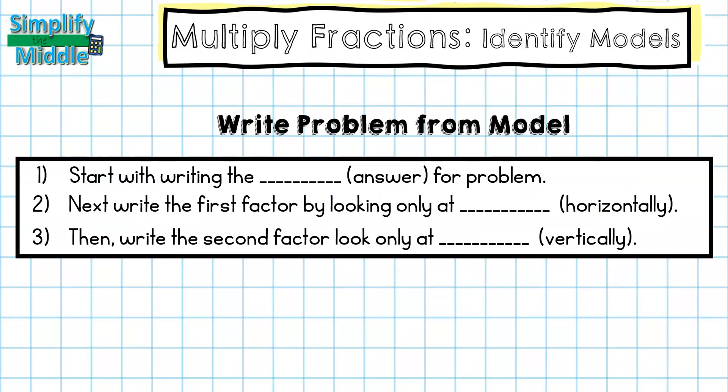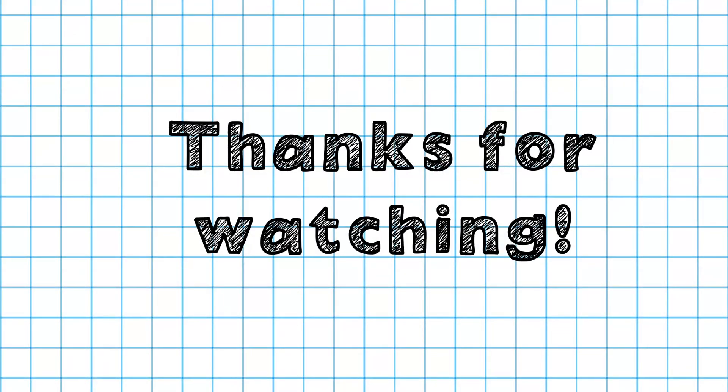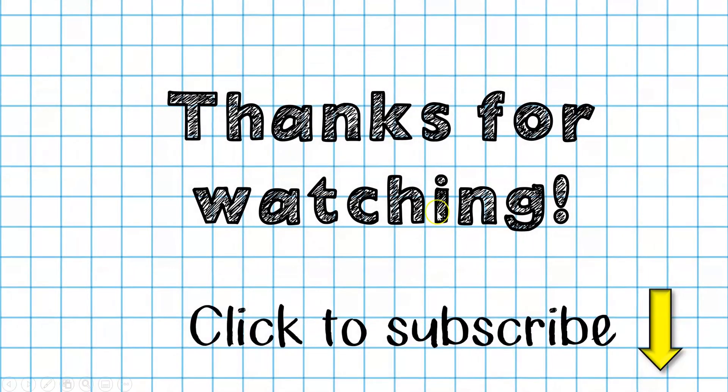Let's wrap up. For writing a problem from a model, you'll start by writing the product or the answer for the problem. Next, write the first factor by looking only at rows or horizontally. Then write the second factor looking only at columns or vertically. That wraps up our lesson. Thanks so much for tuning in. Feel free to click to subscribe for this and other videos. Until next time.